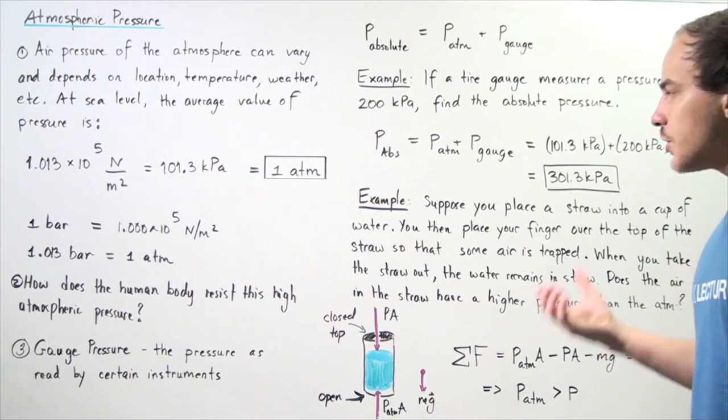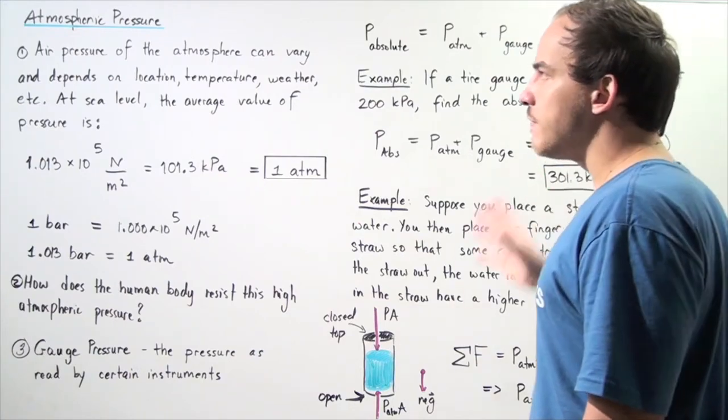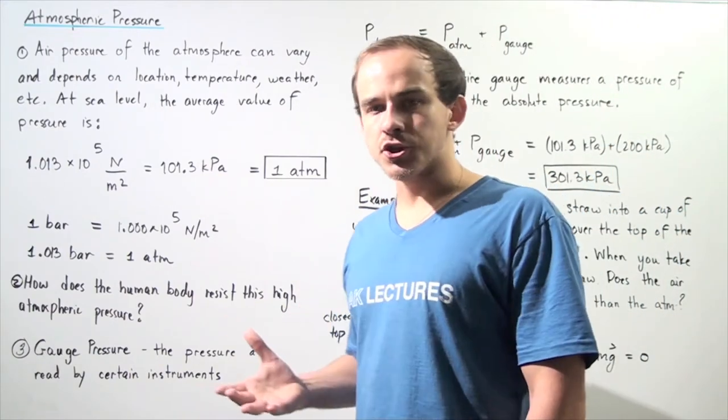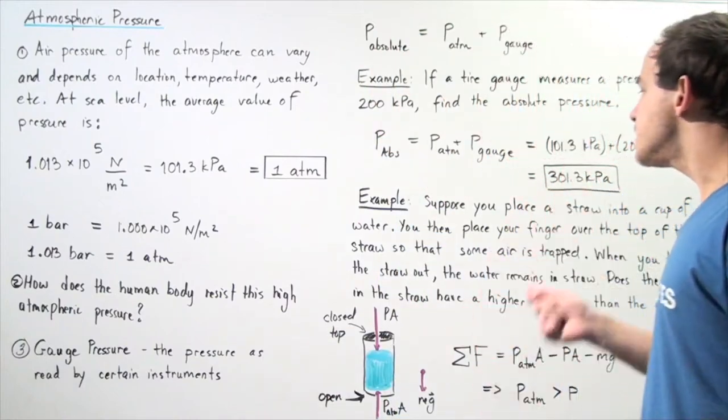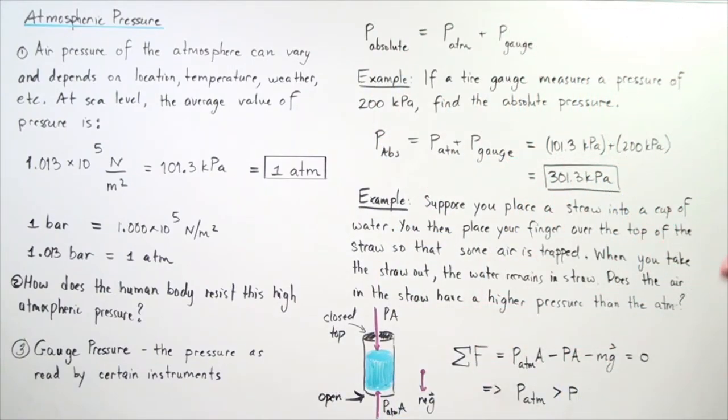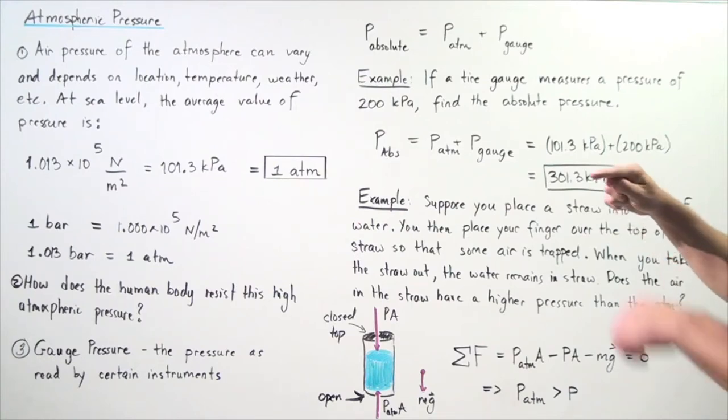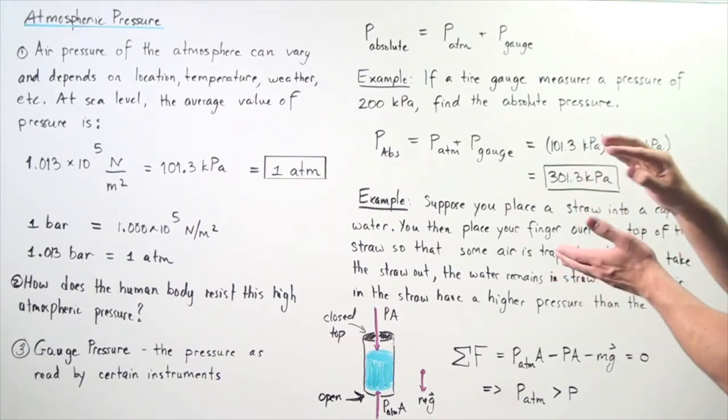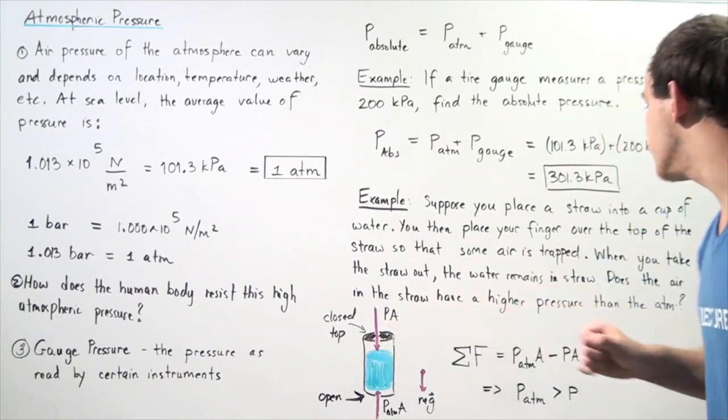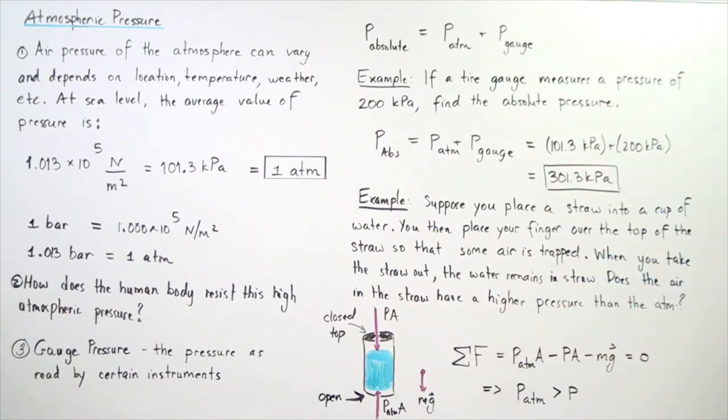Let's look at another interesting example that involves atmospheric pressure. Suppose you place a straw into a cup filled with water. You then place your finger over the top of the straw so that some air is trapped between your finger and the water. It's trapped in this section in the straw. When you take the straw out, the water remains inside the straw.